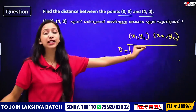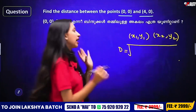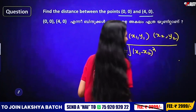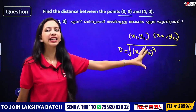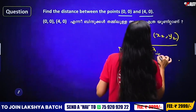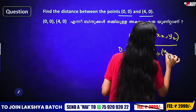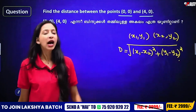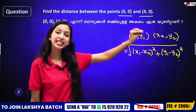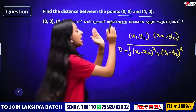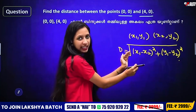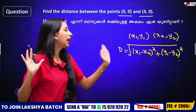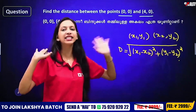We use the distance formula: square root of (x1 minus x2) squared plus (y1 minus y2) squared. The difference in x-values is (x1 minus x2), squared. The difference in y-values is (y1 minus y2), squared. Then we take the square root of the sum to find the distance.